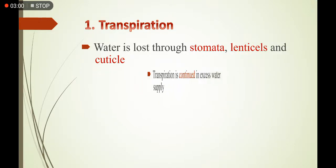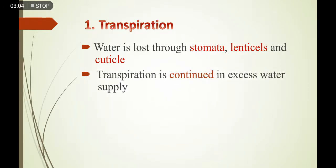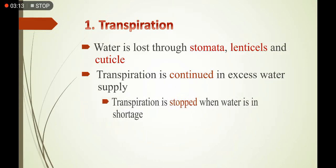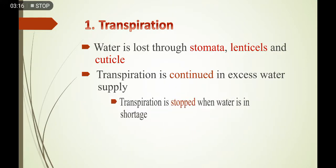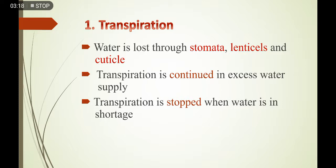جب بھی پانی plant کی body کے اندر excess amount میں available ہوتا ہے تو plant اس water کو stomata کے ذریعے ضائع کرتا ہے۔ Transpiration is also continued in the excess supply of water — کیونکہ جب plants اضافی پانی میں ہوں تو rate of transpiration بڑھتا جاتا ہے۔